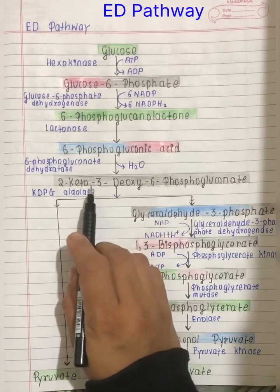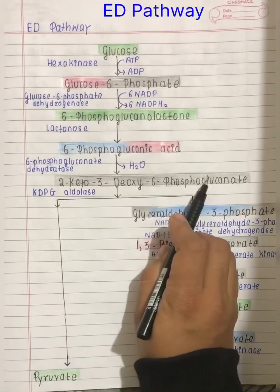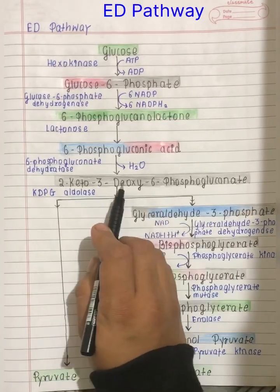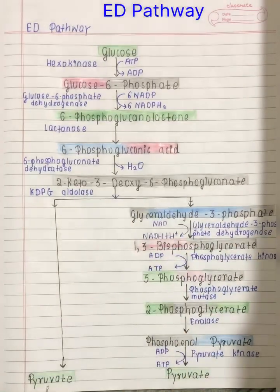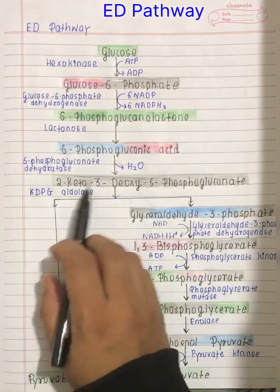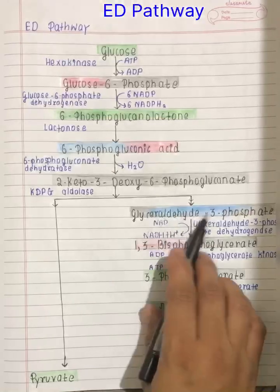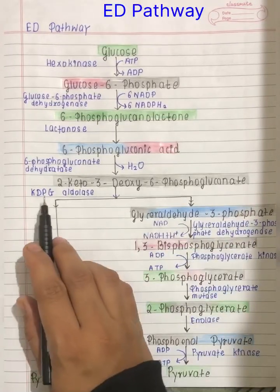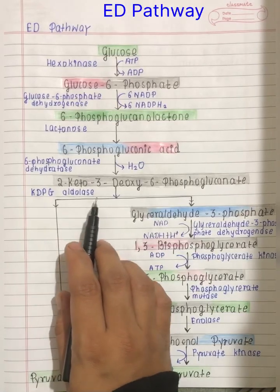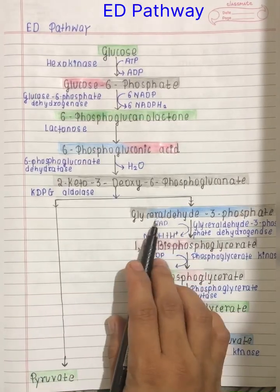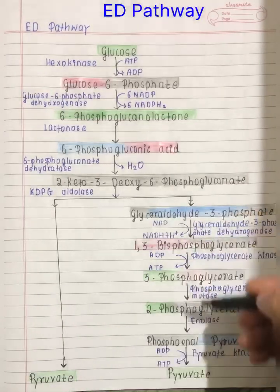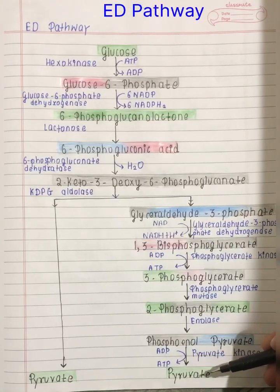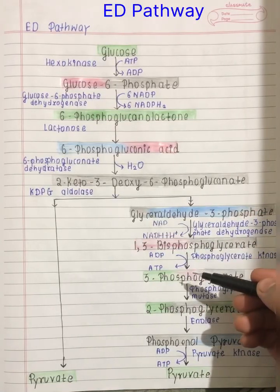After that, there is a cleavage step where 2-keto-3-deoxy-6-phosphogluconate is cleaved into pyruvate and glyceraldehyde-3-phosphate with the help of the enzyme aldolase. Glyceraldehyde-3-phosphate is then converted into pyruvate. These steps are similar to the glycolytic pathway, as already discussed.